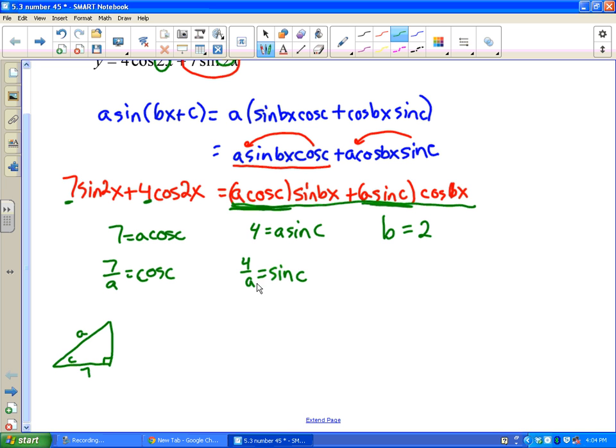Okay, and let's think about a right triangle that has an angle c. Well, if cosine of c is 7 over a, that means the adjacent side is 7 and the hypotenuse is a. And at the same time we're saying that sine of c is 4 over a, well that means the opposite side is 4 and the hypotenuse is a. Here's the opposite side from c and I already had that labeled. Hopefully we can all tell how to find the third side of a right triangle - we would use the Pythagorean theorem.